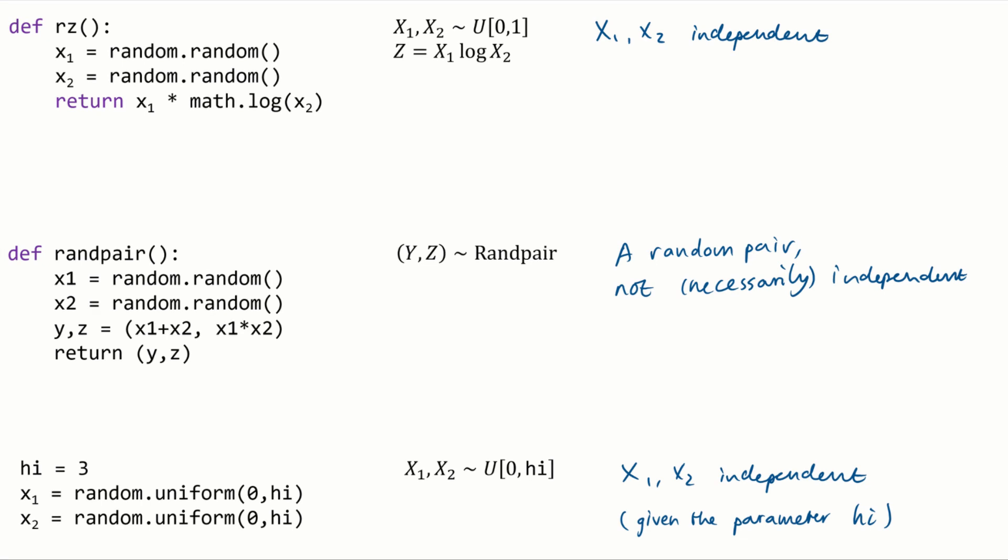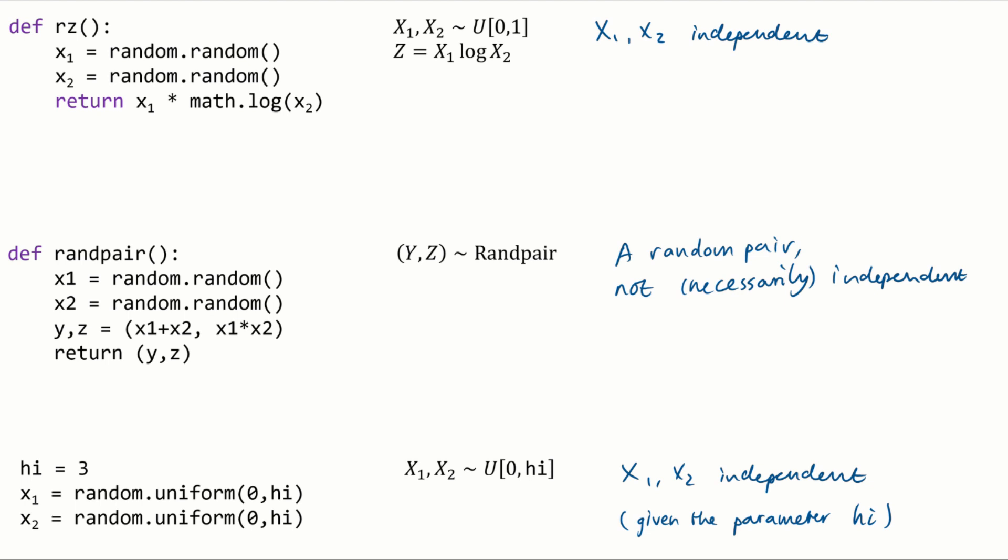It's worth saying just one more thing about this twiddle symbols. When we write something like a twiddles b, it means a and b have the same distribution.